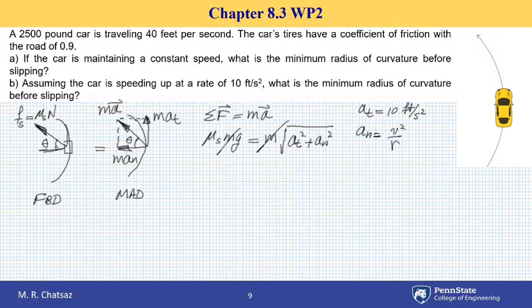Therefore, total acceleration has a magnitude of square root of a_t² plus a_n². Observe that m cancels out. And if I continue with numerical calculation, friction coefficient is 0.9, g is 32.2 feet per second squared, equals to a_t² which is 10² plus a_n² which is velocity to the fourth power. I'm doing the numerical equation, so I write v² squared, which is v to the fourth power, and the denominator is also squared, so I have over r².